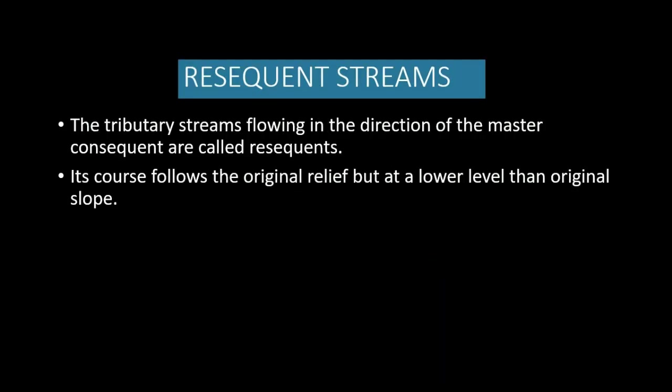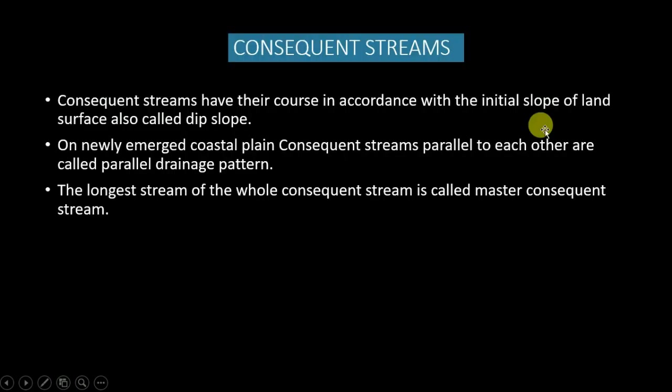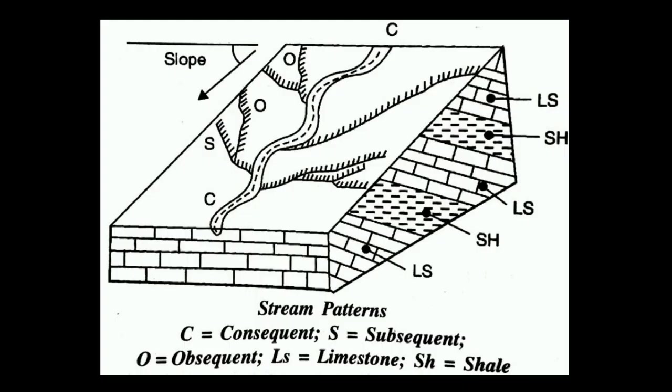Let's talk about ressequent streams. Ressequent streams are those which flow in the same direction as the master consequent stream. The difference between ressequent and consequent streams is that ressequent streams originate at a much later date in comparison to the master consequent streams. Since they are of recent origin, they are called ressequent, and they flow in exactly the same direction as the master consequent stream.